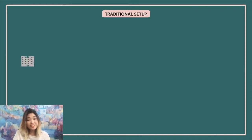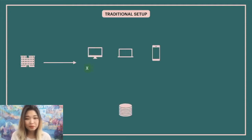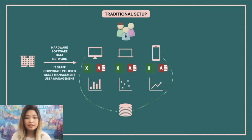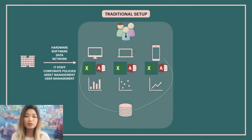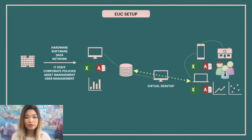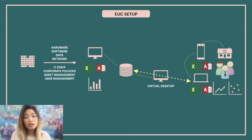In a traditional setup, the company provides hardware, software, network, and data to users, as well as IT resources for supporting users and related processes such as asset management, user management, backup, disaster recovery, incident management, and so on. In the end-user computing setup, consider that the majority of users are working from home using their own network, their own laptops and applications. While users still have access to company data through, for example, a virtual desktop, the computing occurs at the endpoint and allows companies to reduce their direct and indirect costs.